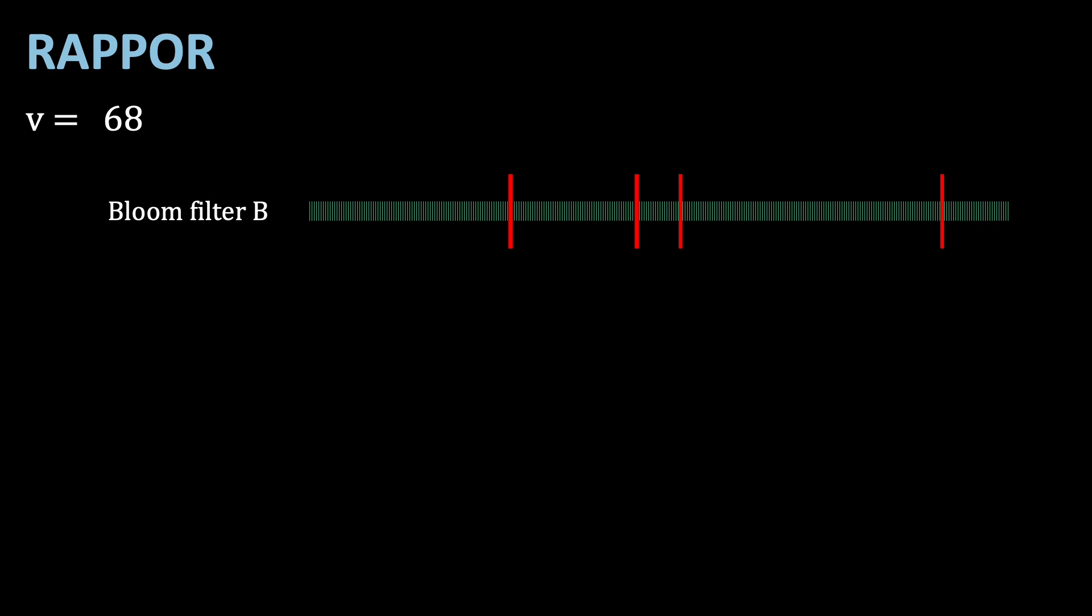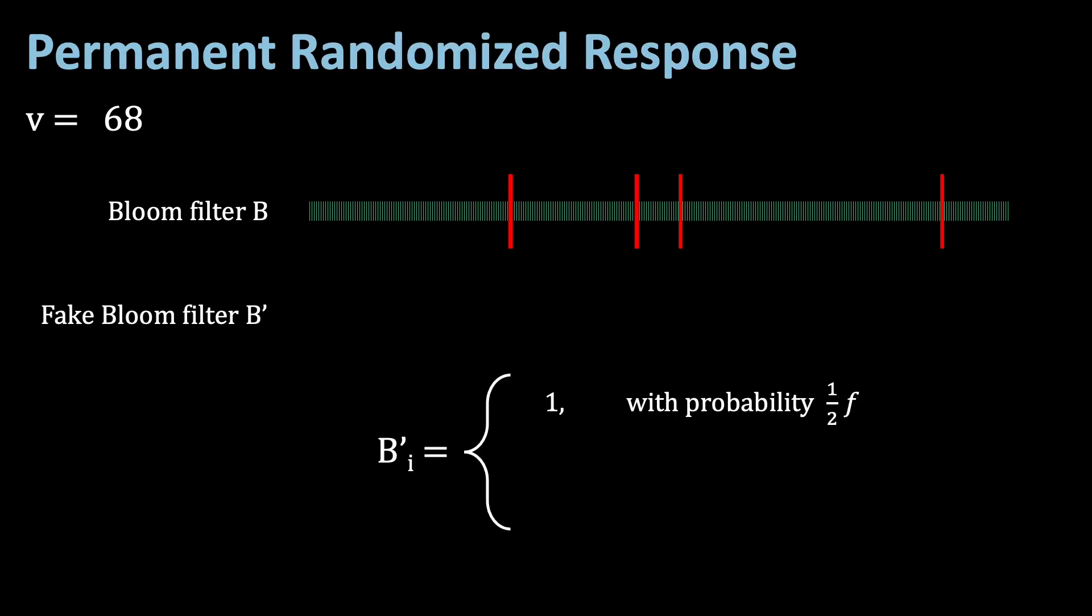Now, the first thing in the algorithm is called permanent randomized response. This is calculated once for each value. So for each bit in the bloom filter, a binary reporting value is created. This is stored in the fake bloom filter, B'. The value is 1 with probability half times F and 0 with the same probability half F. A third option is to keep the value the same as it is in the original bloom filter with probability 1 minus F.